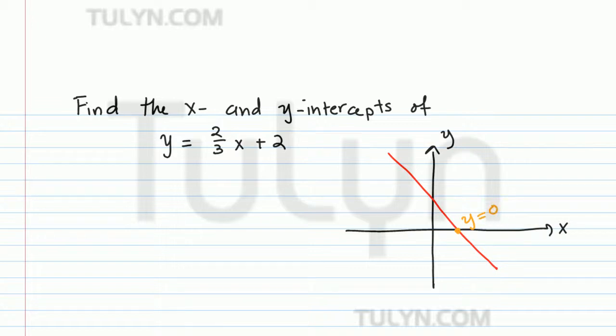And for our y-intercept, it's the point where the line crosses the y-axis, which is this point right here. And here, x is equal to zero. So let's find our x-intercept first.